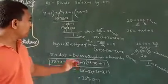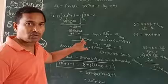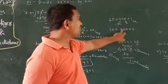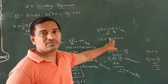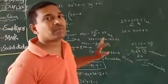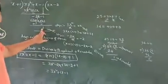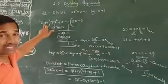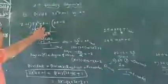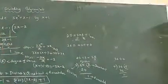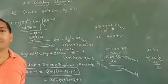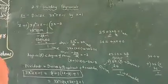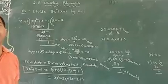Now, if you get the remainder as 0, then the divisor is a factor of the dividend. If we got remainder 0, this divisor, which is x plus 1, would be the factor of 3x squared plus x minus 1. That is the remainder theorem. You have to do the examples. Okay, bye.